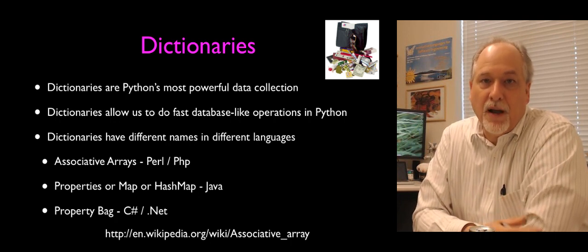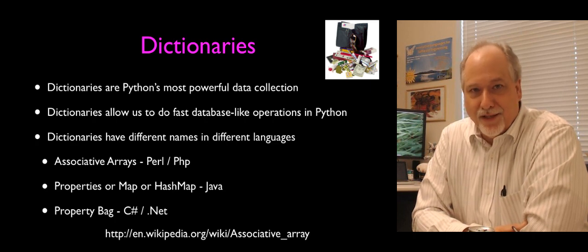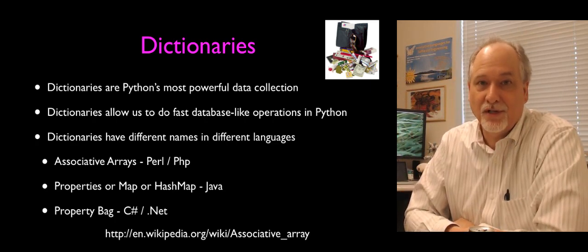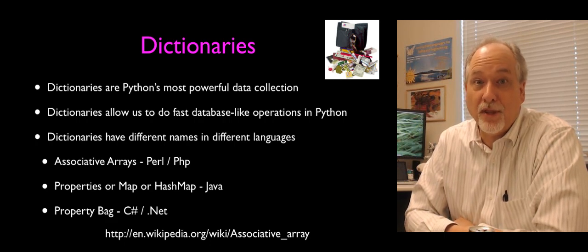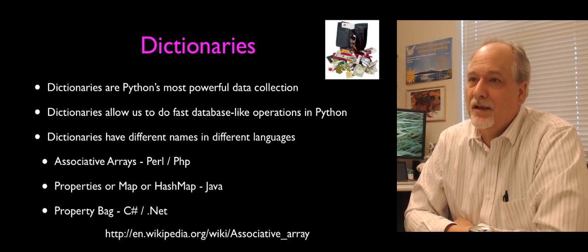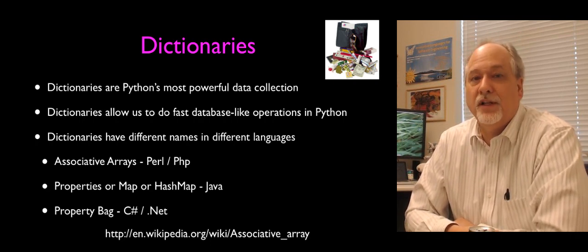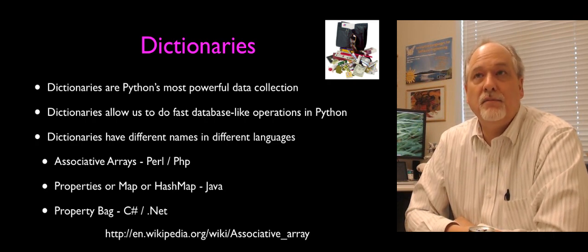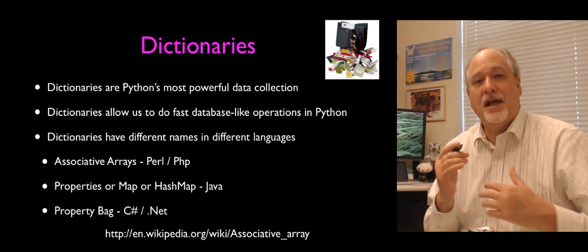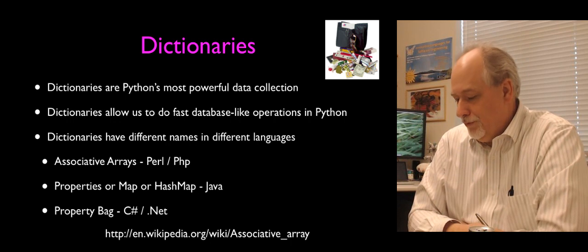Python's most powerful data collection is the dictionary. When you get used to wielding them, you'll find you can do so much with these things. At the beginning, you're just learning how to use them without hurting yourself — but they're very powerful. It's like a database. It allows you to store very arbitrary data organized in however you feel like organizing it, in a way that advances the cause of the program you're writing.